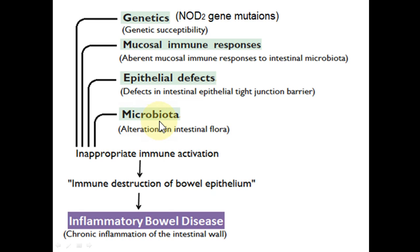Each individual has a unique intestinal flora that is unique to that particular person. The development of this flora passes through certain stages and depends upon the person's exposure to various infections, and the intestinal flora is modified accordingly. If any alterations occur in a person's intestinal flora, they become a victim of inflammatory bowel diseases.